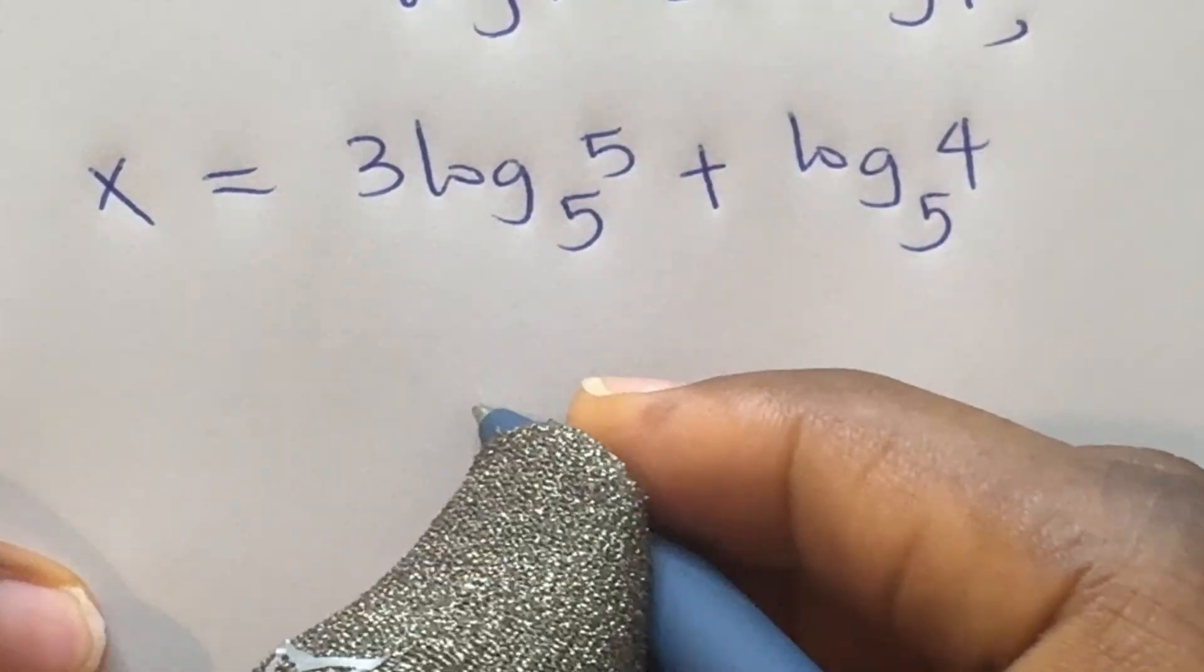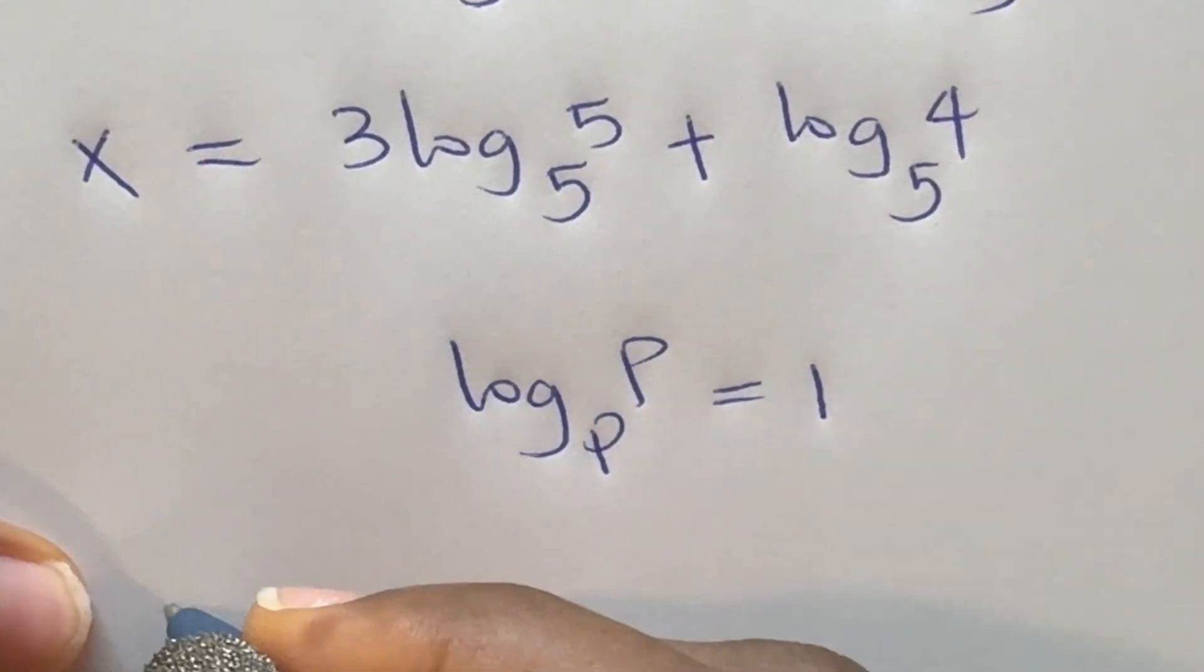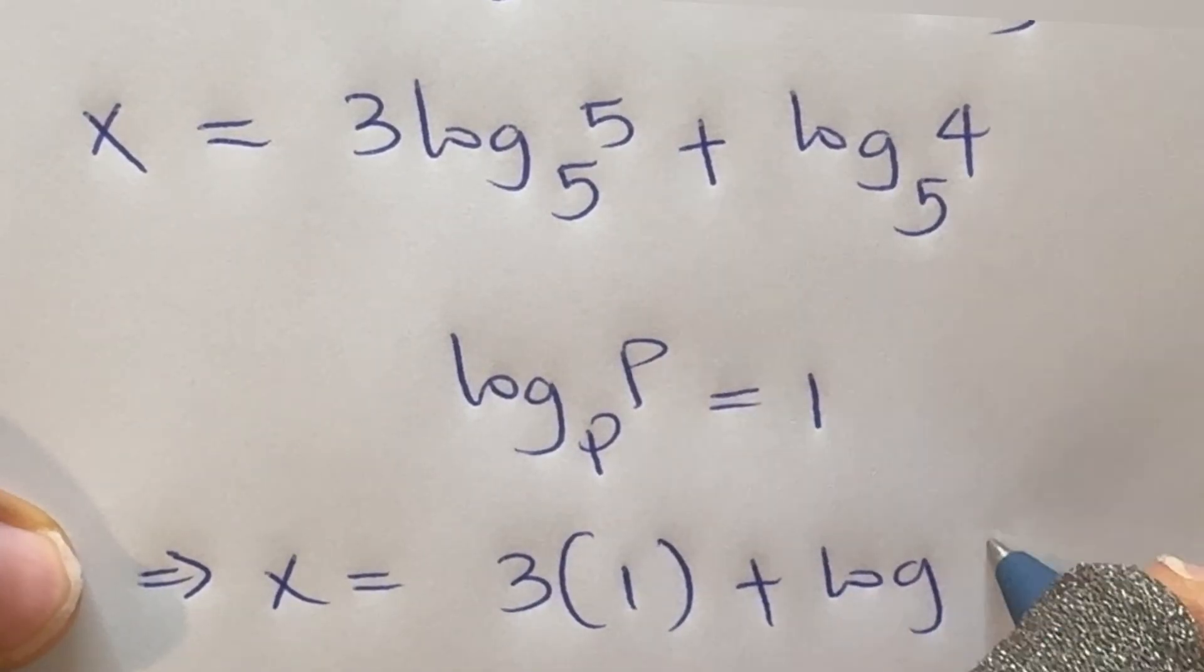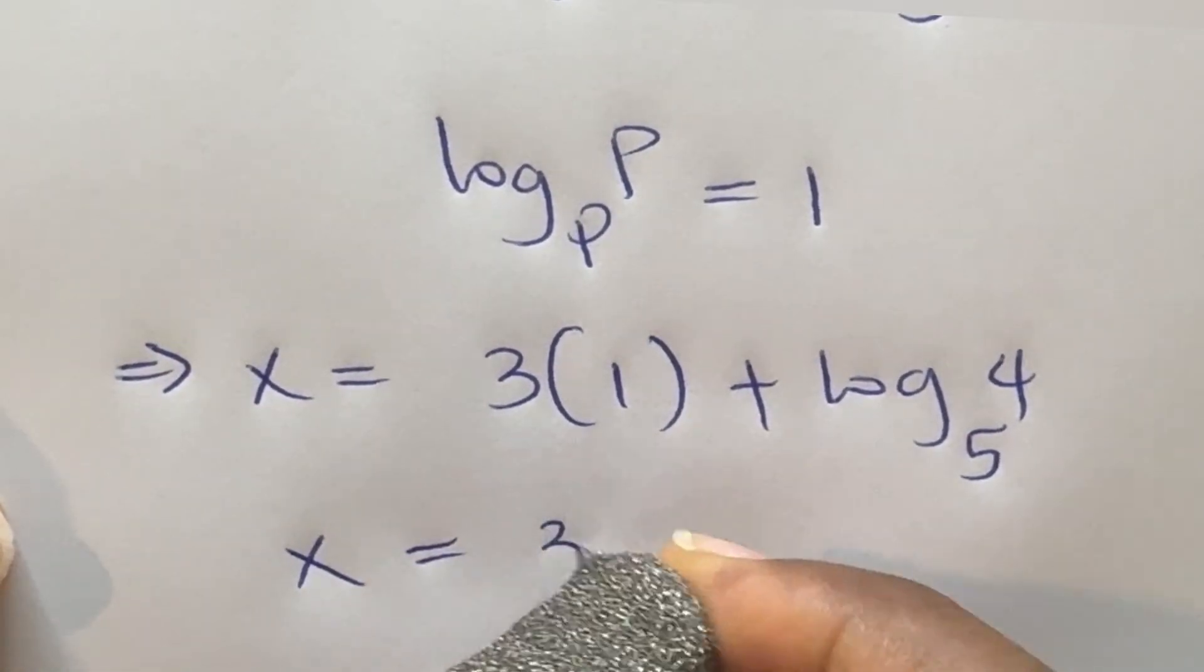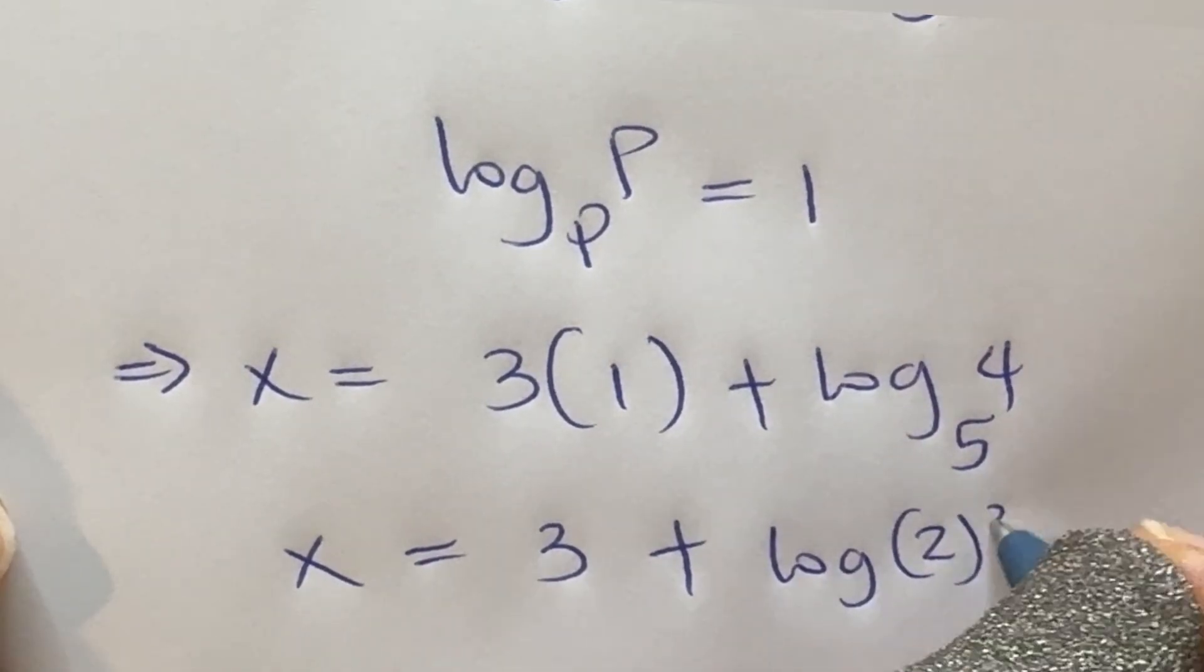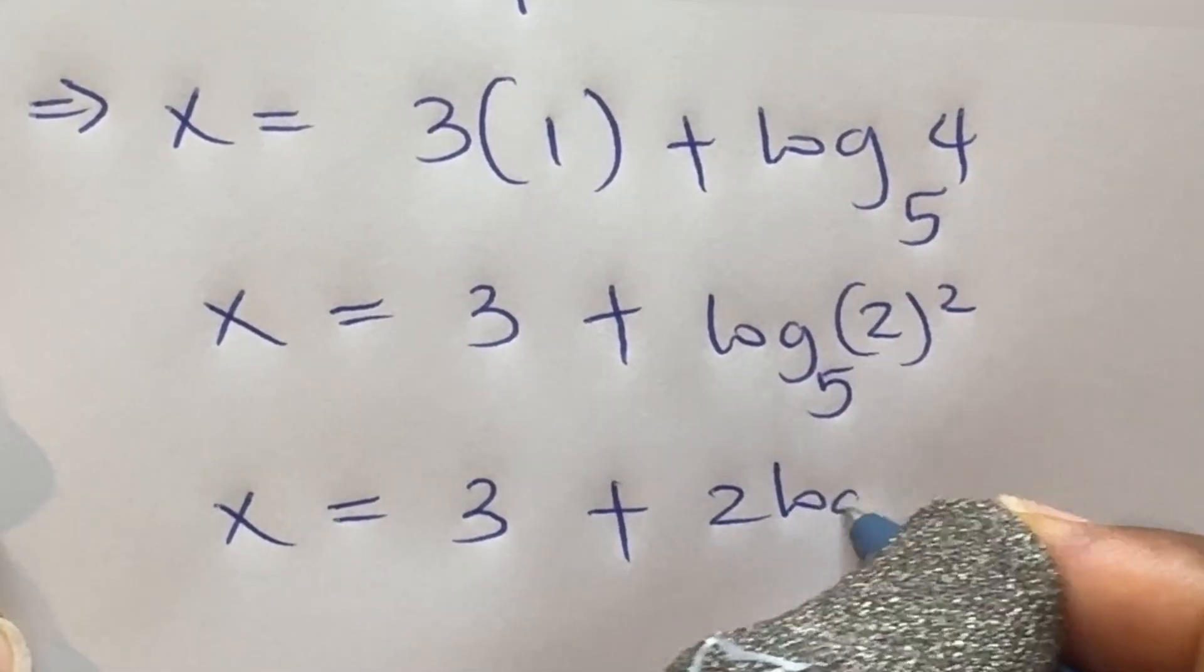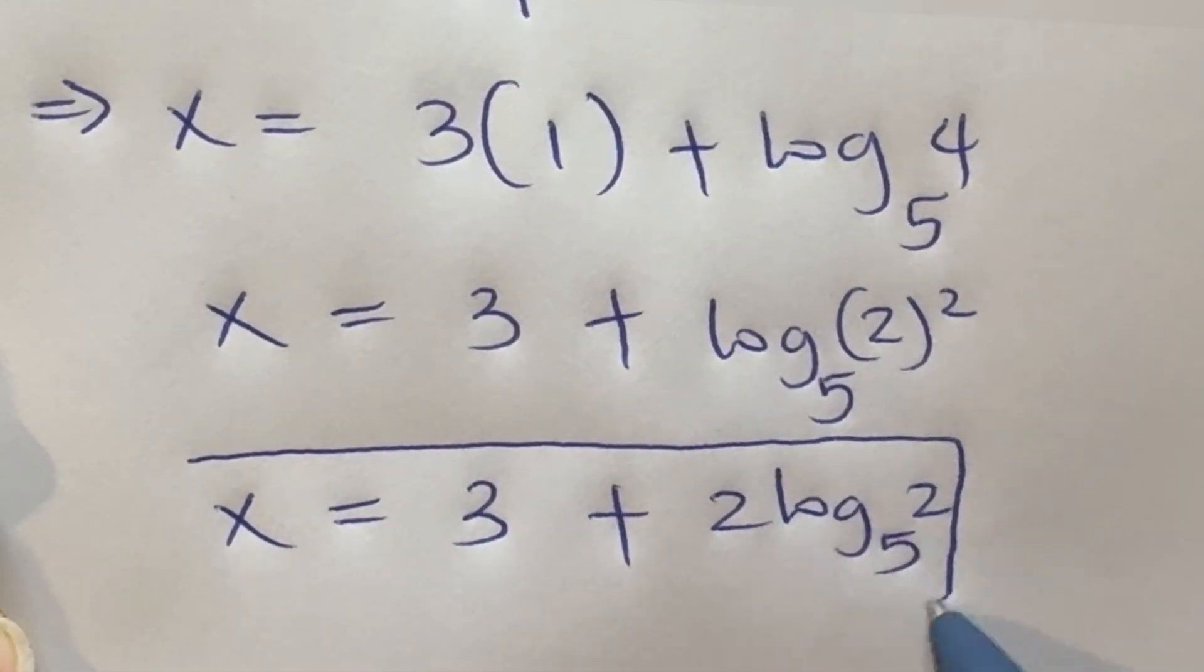We'll also apply log p base p equals 1, which implies that x is equal to 3 times log 5 base 5 is 1, then plus log 4 base 5. So x is going to be 3 plus, we can also express 4 as 2 raised to power 2, so this becomes 2 raised to power 2 base 5, and then we can say x is equal to 3 plus 2 log 2 base 5, which will give us the final result to this problem.